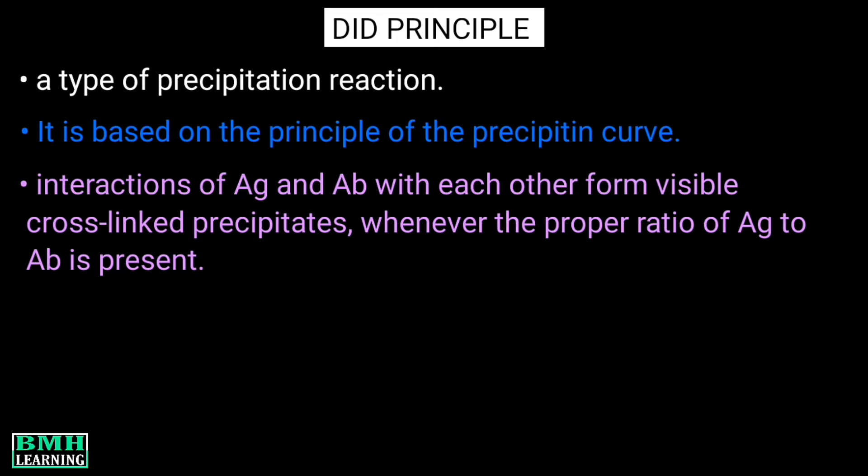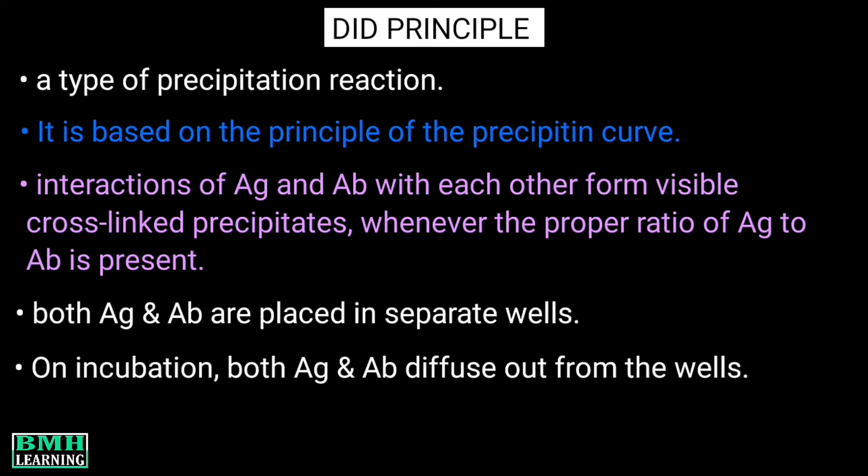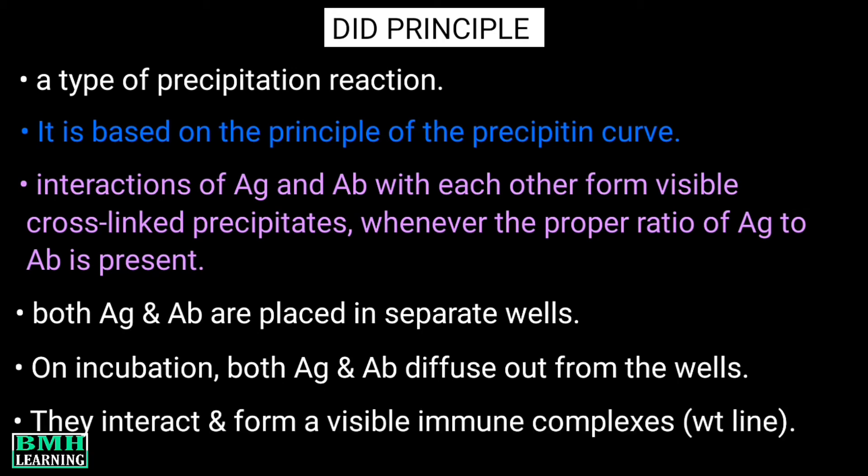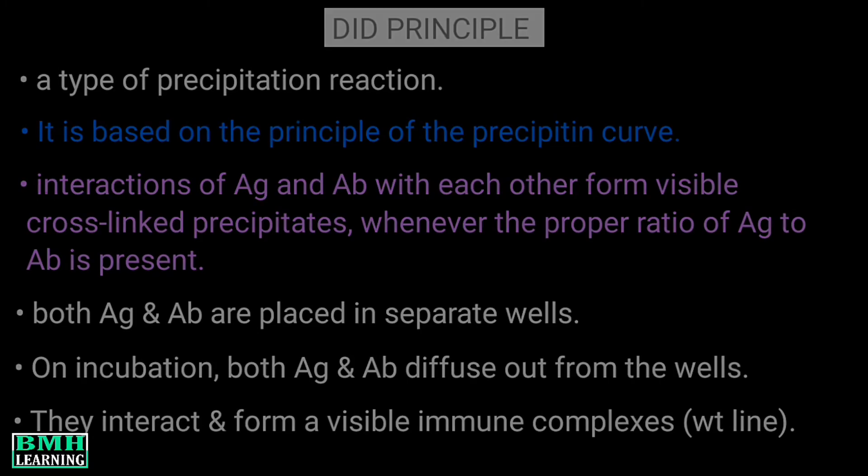So in this method, both antigen and antibodies are placed in wells made on the gel plates. On incubation, both antigen and the antibodies diffuse out from the wells. When they meet and interact together, they form a visible immune complex that gets precipitated to produce a thin white precipitant line.